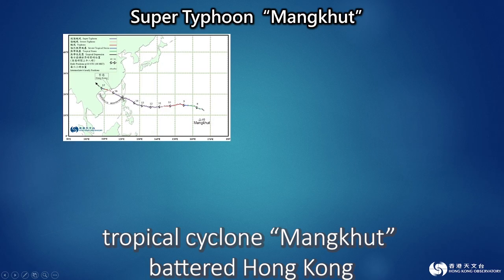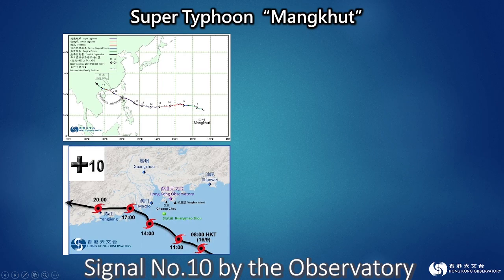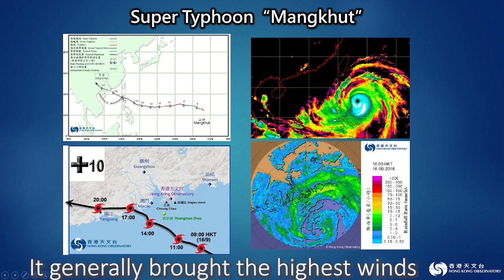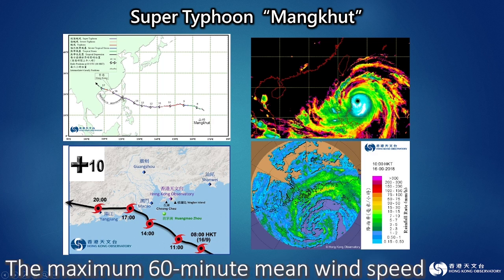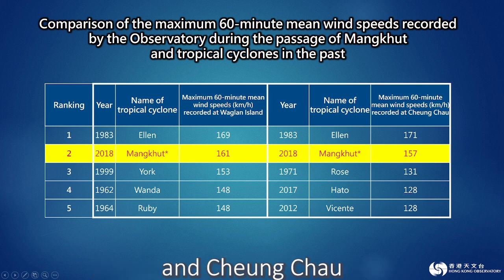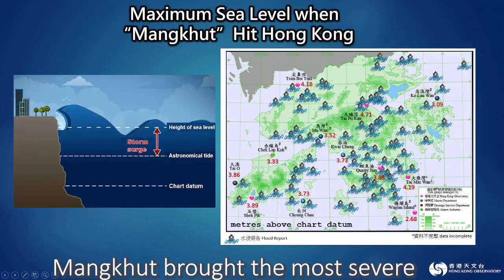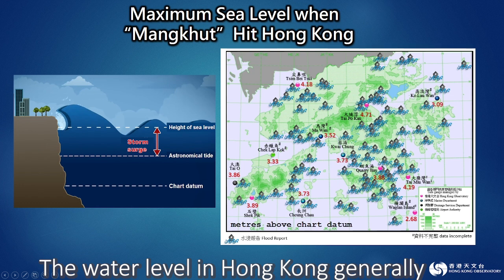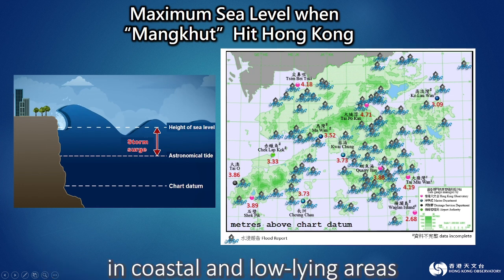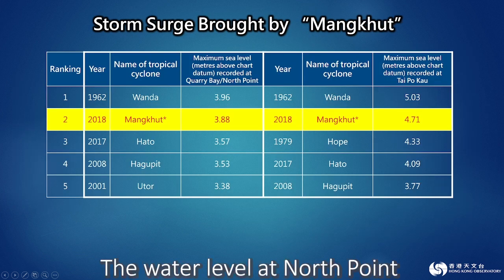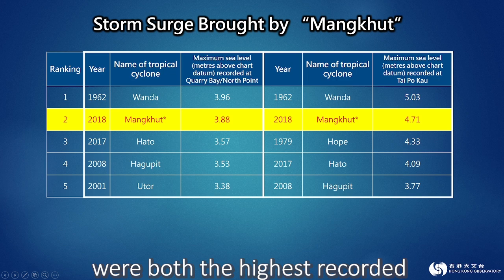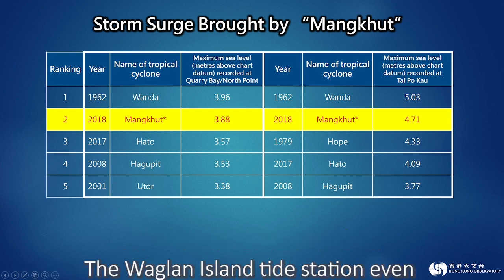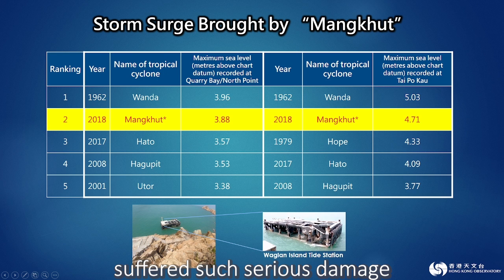On 16 September 2018, tropical cyclone Mangkhut battered Hong Kong, rendering the issuance of the hurricane signal number 10 by the observatory. Mangkhut was characterized by its extensive circulation, ferocious winds, and fast movement. It generally brought the highest winds in Hong Kong in over three decades. The maximum 60-minute mean wind speed recorded at Waglan Island and Cheung Chau were ranked second highest. Mangkhut brought the most severe storm surge to Hong Kong in many years, causing widespread damage. The water level in Hong Kong generally rose more than two metres, causing serious flooding in coastal and low-lying areas. Water levels at North Point and Taipo Kau were the highest recorded since Typhoon Wanda in 1962. Five of the six tide stations of the observatory measured a record-breaking storm surge, and the Waglan Island Tide Station suffered such serious damage as to lead to the loss of records.